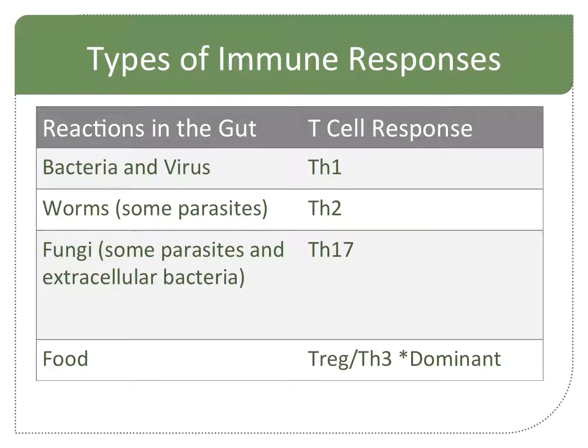Fungus — fungus is mold — and some parasites are going to give you a Th17 reaction. You can have a Th17 reaction in your gut just like you can have it anywhere else. And then the dominant reaction in the gut is the response to food. It used to be called a Th3 response, and it's also called a T-regulatory response. There are actually five different subcategories of T-regs, but we'll just group them all together and call them T-regs.